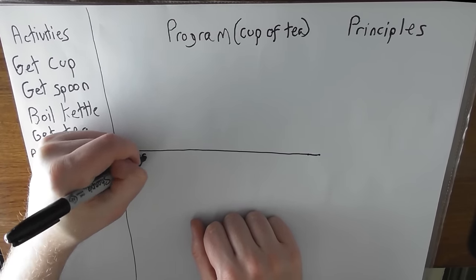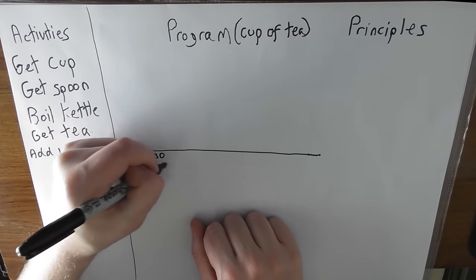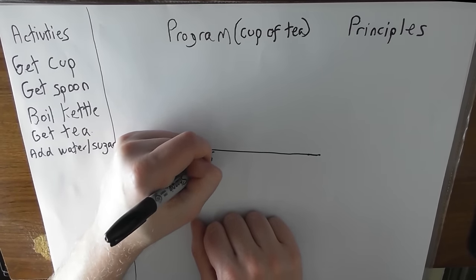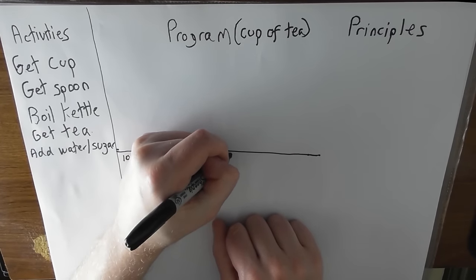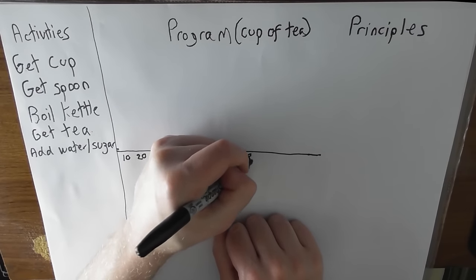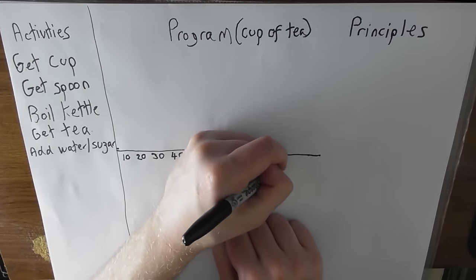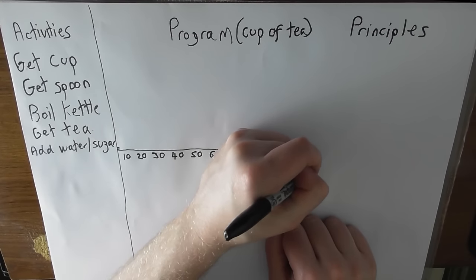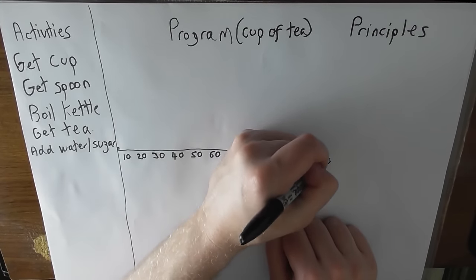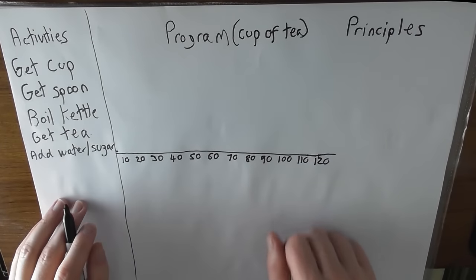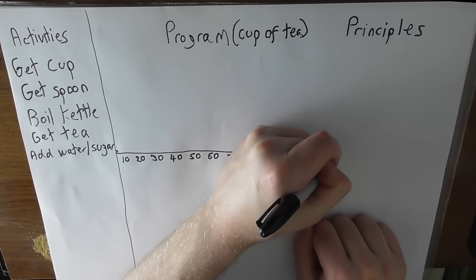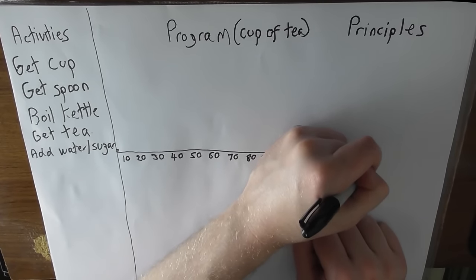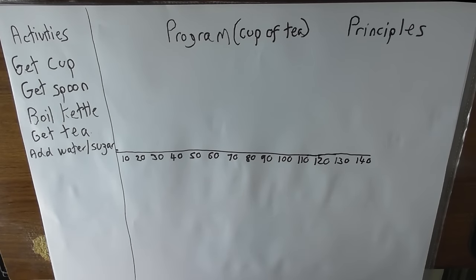And along here, we're going to draw our timeline. So, obviously, the line is zero. I'm going to go in 10 second increments. 10, 20, 30, 40, 50, 60, 70, 80, 90, 100, 110. I think maybe two minutes would probably be long enough. Maybe a bit more, maybe. Go to two minutes and 20 seconds.